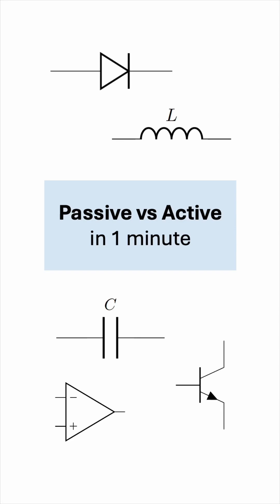In electric circuits, we have two types of elements: passive and active. Let's understand the difference between them in one minute.